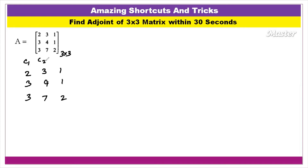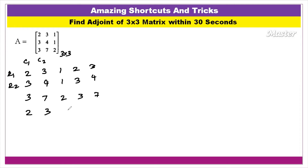Column 1 and column 2 are noted. You can write it. The next step is the same. Step 2: 1, 2, 3, 4, 7. Next row — we will see row 1, row 2. Again, the same: 2, 3, 1, 2, 3, then 3, 4, 1, 3, 4.